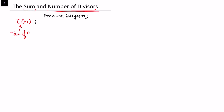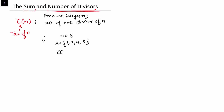For a positive integer n, tau(n) counts the number of positive divisors of n. For example, if n = 8, the positive divisors of 8 are 1, 2, 4, 8, so tau(8) = 4. This is the definition of the tau(n) function — number of positive divisors of n.